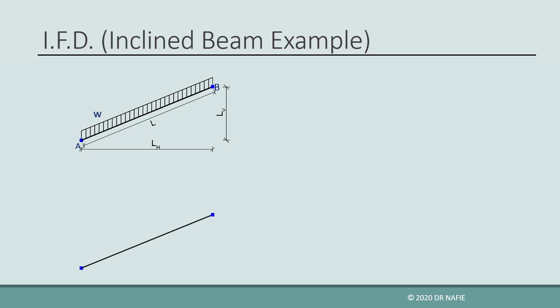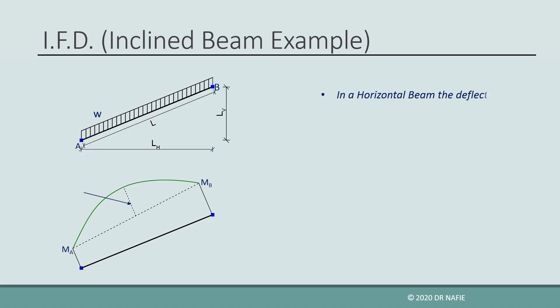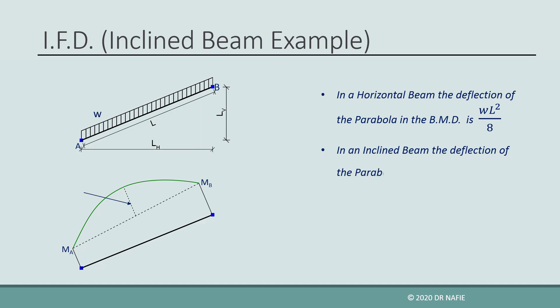If the moments at points A and B are known and we want to draw the moment diagram between A and B, then we must connect MA and MB using a parabola. If the beam is horizontal, the deflection of this parabola from the connecting line will be equal to the value of the load multiplied by the square of L divided by 8, where L is the length of AB. In the case of the inclined beam, the deflection of the parabola will be slightly different; it will be equal to the value of the load multiplied by L1 and L2 divided by 8.